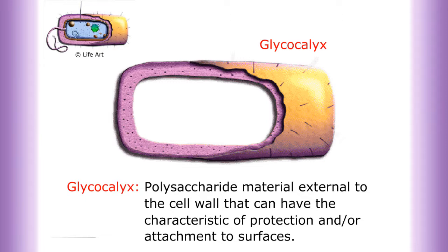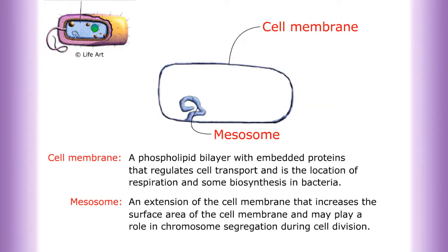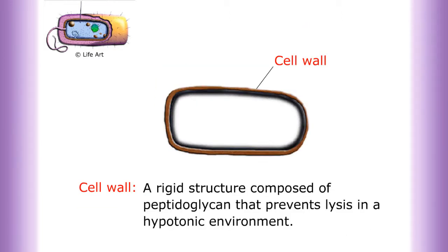Glycocalyx is polysaccharide material external to the cell wall that can have the characteristic of protection and/or attachment to surfaces. Cell membrane is a phospholipid bilayer with embedded proteins that regulates cell transport and is the location of respiration and some biosynthesis in bacteria. Mesosome is an extension of the cell membrane that increases the surface area of the cell membrane and may play a role in chromosome segregation during cell division.